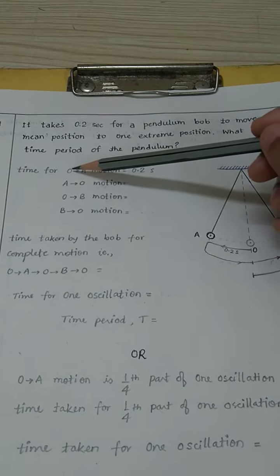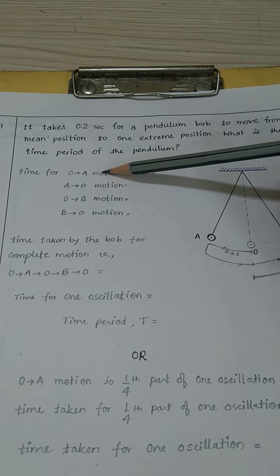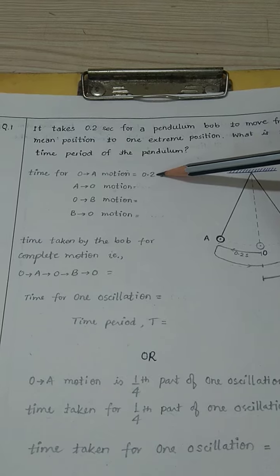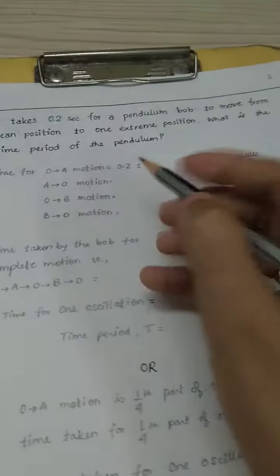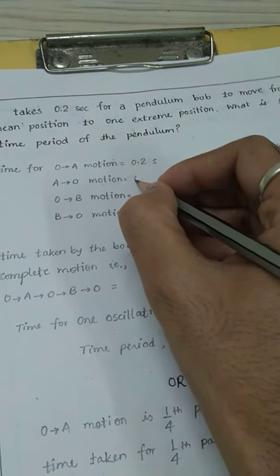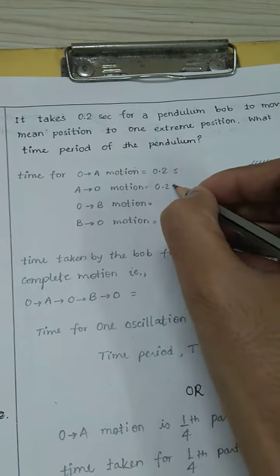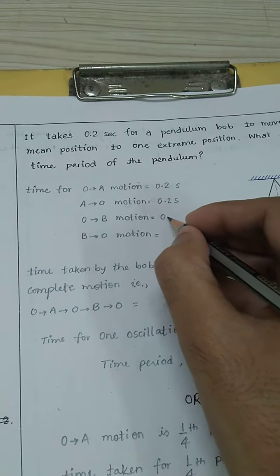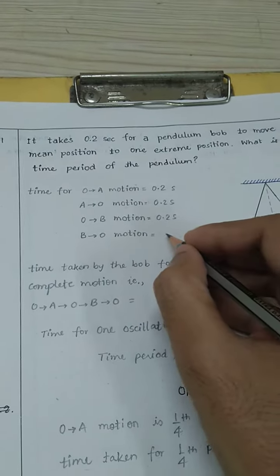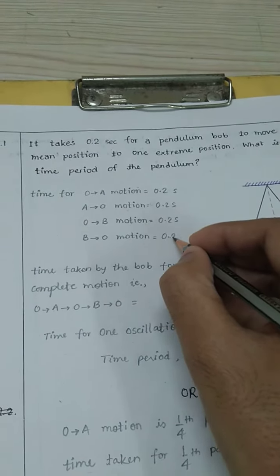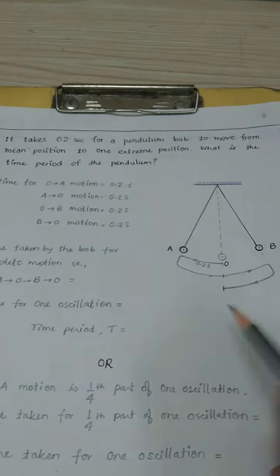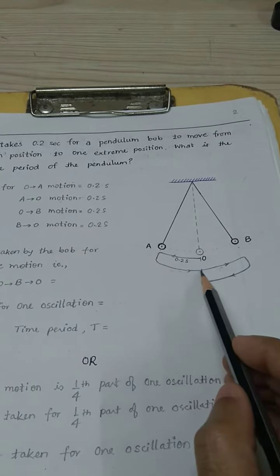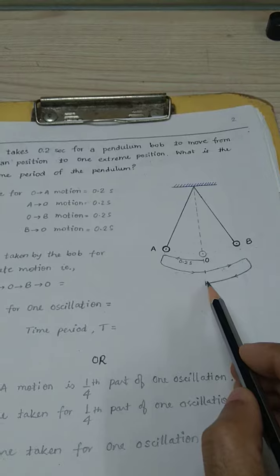So if the motion O to A takes 0.2 seconds, it means A to O also takes 0.2 seconds. O to B will take 0.2 seconds, and B to O also takes 0.2 seconds. So each part will take equal time.